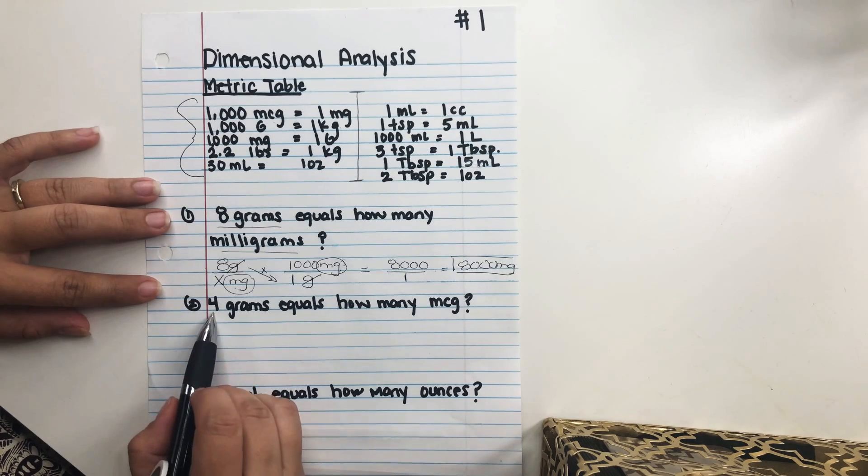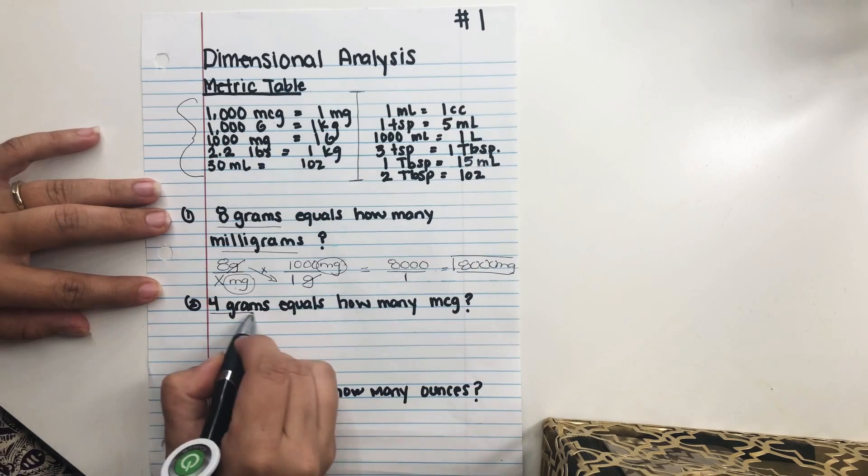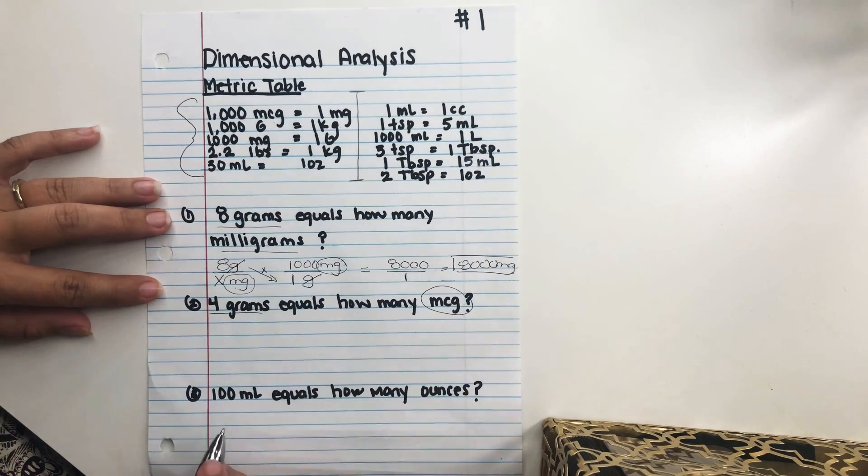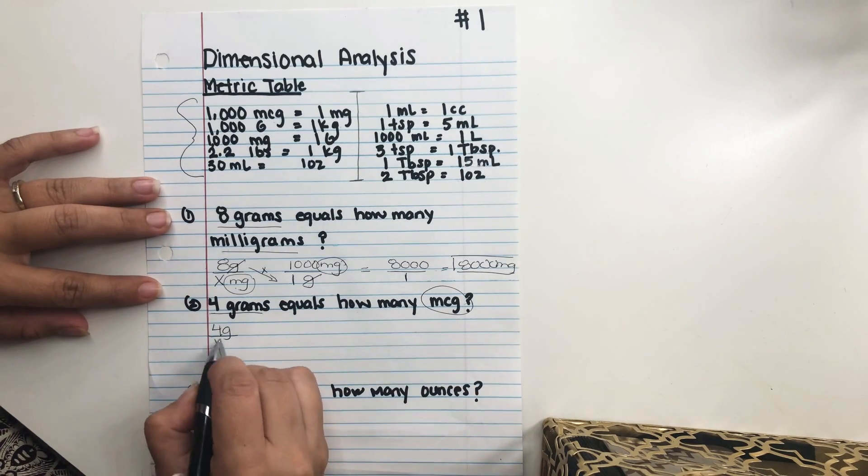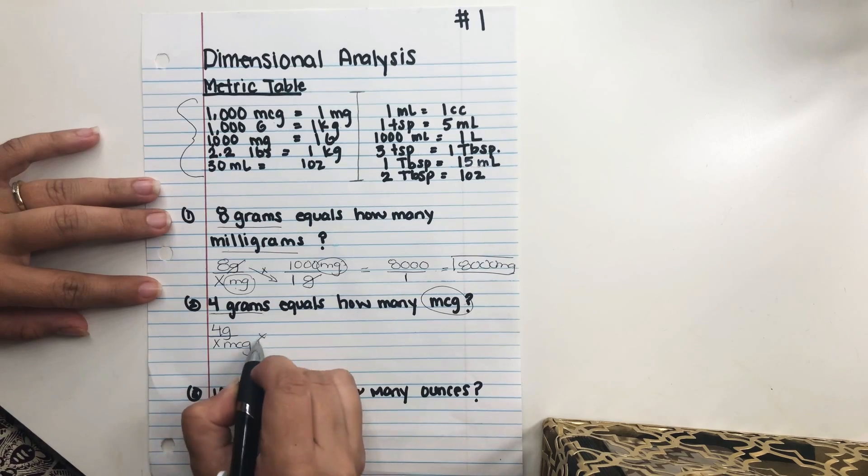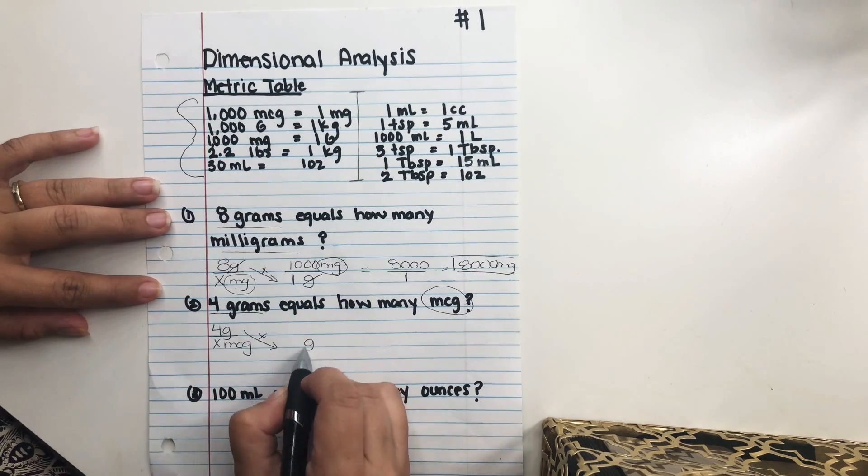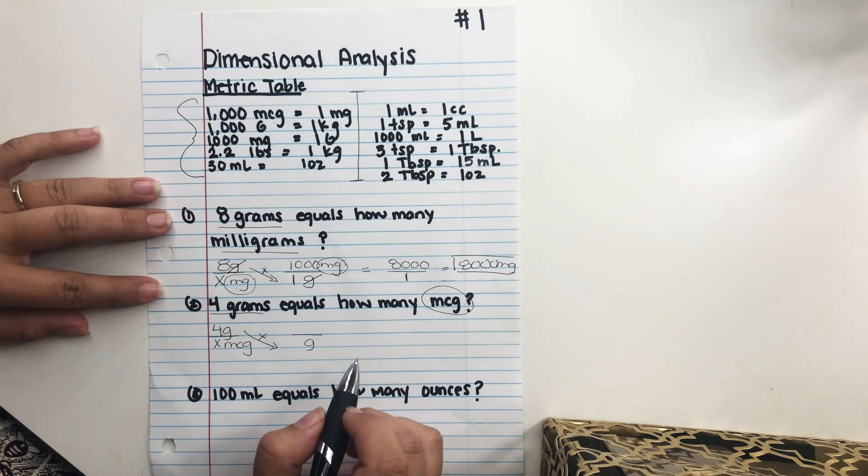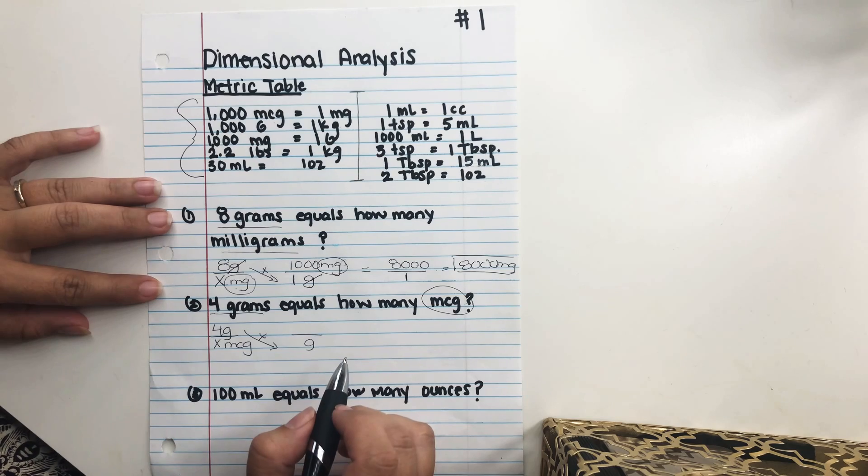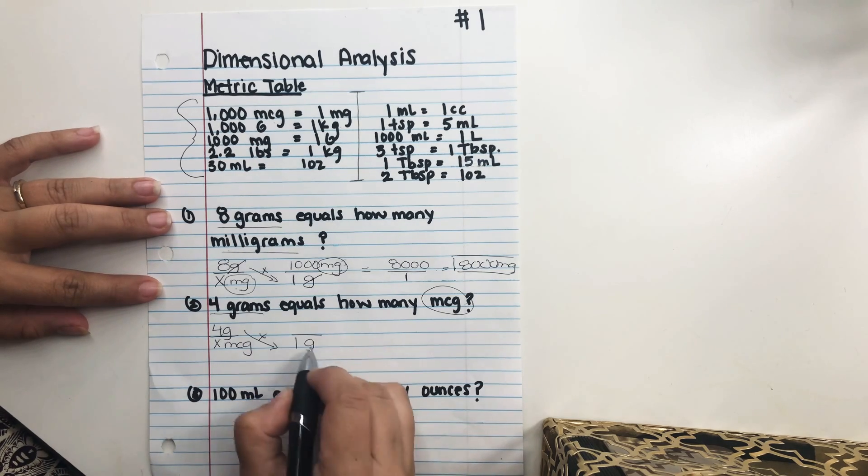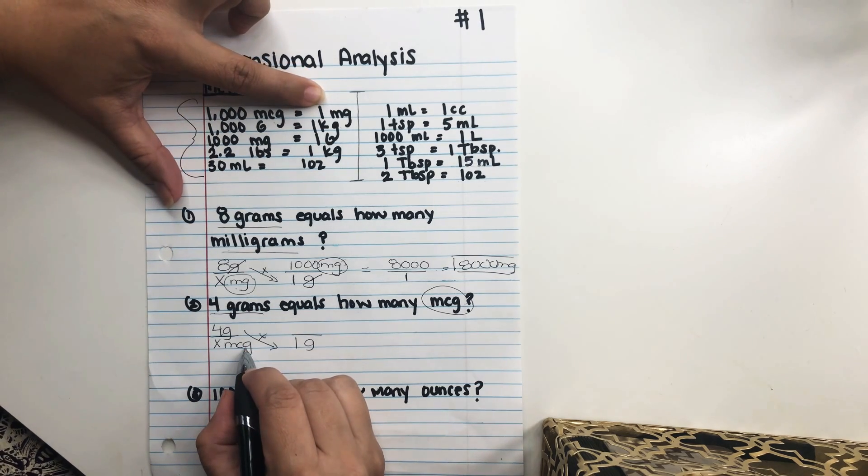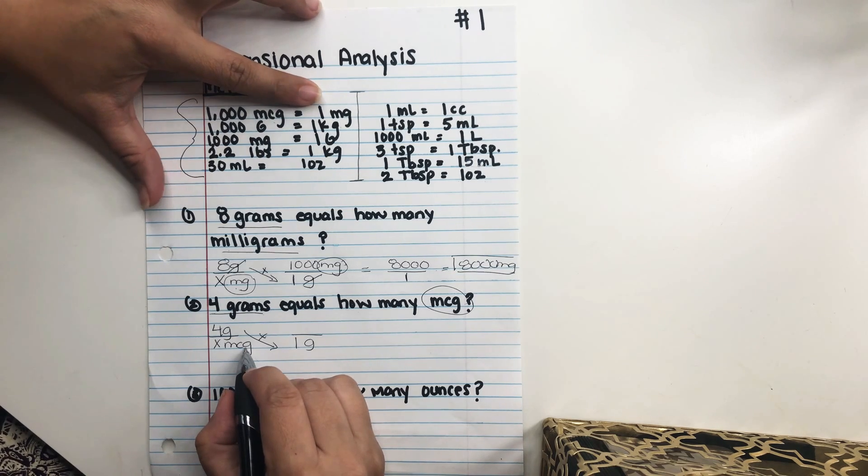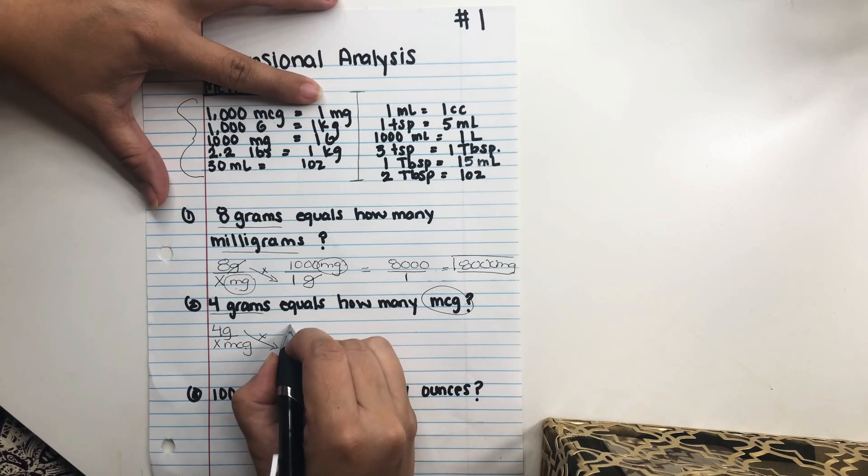So we're gonna go ahead and do the next one. The next one is 4 grams equals how many micrograms? So we know that we have 4 grams and we need to find micrograms. So we're gonna go ahead and use the information that we have 4 grams and we need to find micrograms. So we're gonna put X micrograms. And we know that we have grams here. We have to have grams down here. So let's go ahead and use our metric table to find out how much does 1 gram have. 1 gram equals how many micrograms. So we know that 1 gram equals 1,000 milligrams.